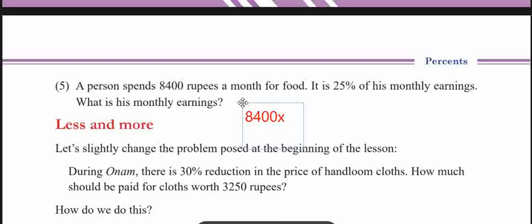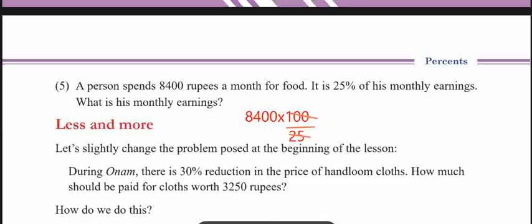The total of his monthly earnings is 100 by 25. So it's 100 by 25. There are zeros to cancel. Now 25 times 4 gives 100 divided by 25 equals 4. So it's 400.